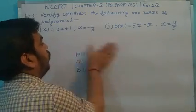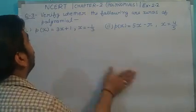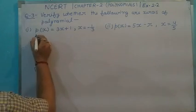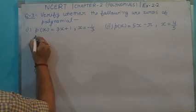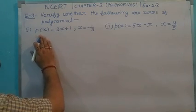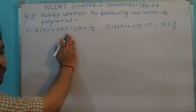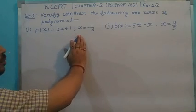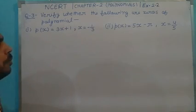Now we are going to solve question first part. And you will be much clearer after solving it. Function is given p(x) = 3x + 1, and we have to choose x = -1/3.